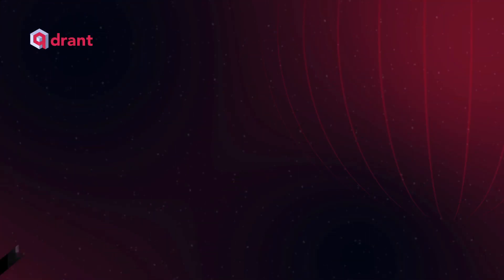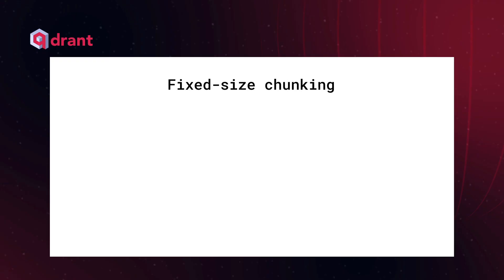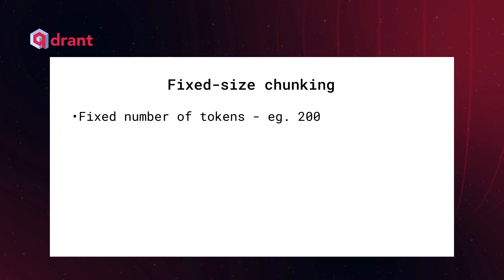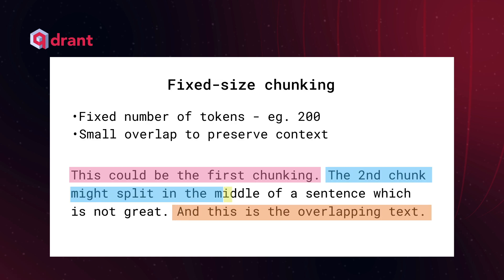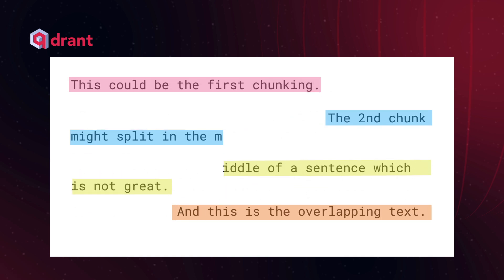Let's take a look at a few strategies we can use to split our documents into chunks and the trade-offs of each one. One of the most common methods is fixed-size chunking. You define a number of tokens you want per chunk — for example, 200 — and maybe a little overlap so you don't lose too much context. This is usually good enough when your documents don't have consistent formatting, but you might split things mid-sentence or mid-thought.